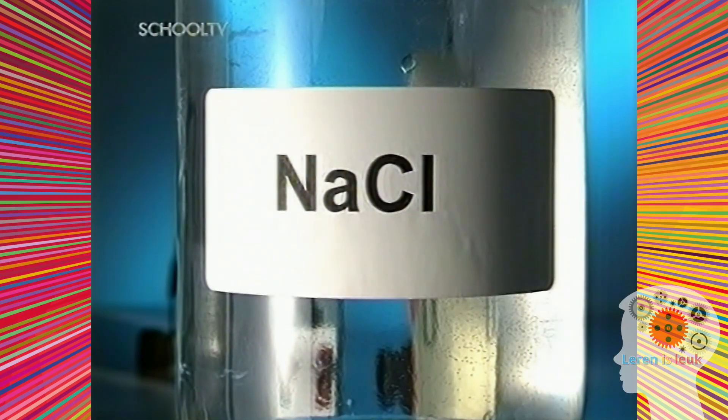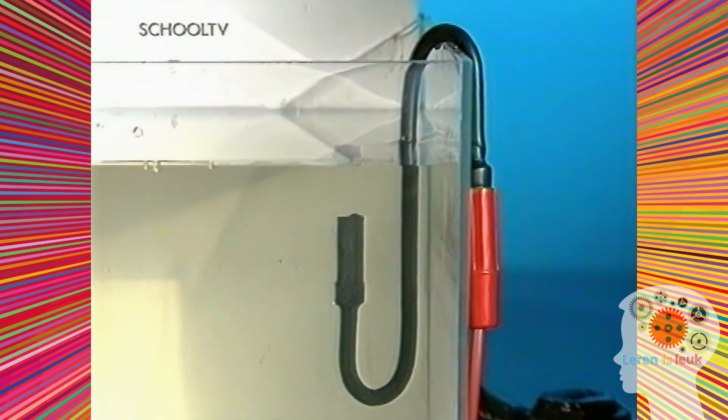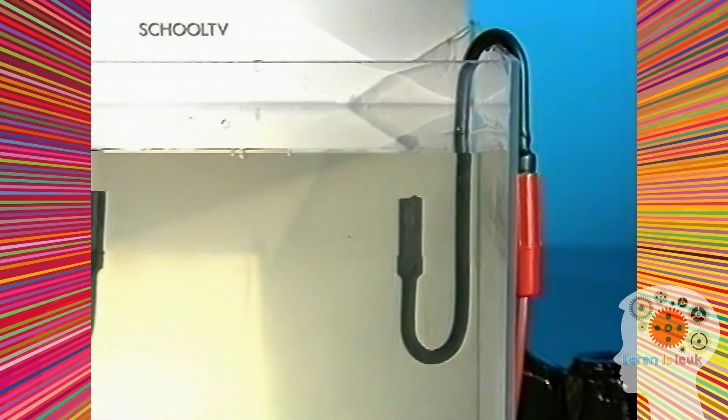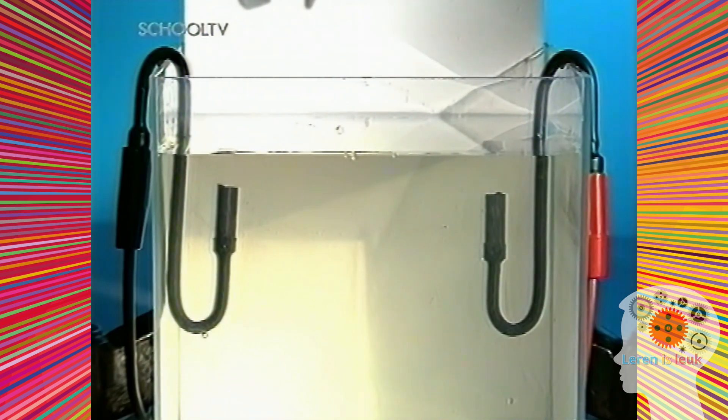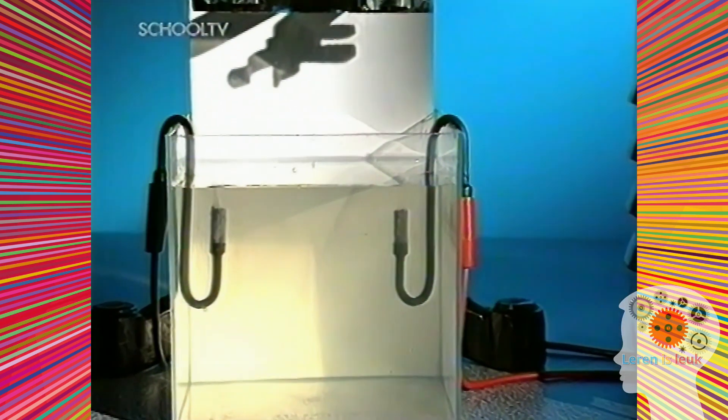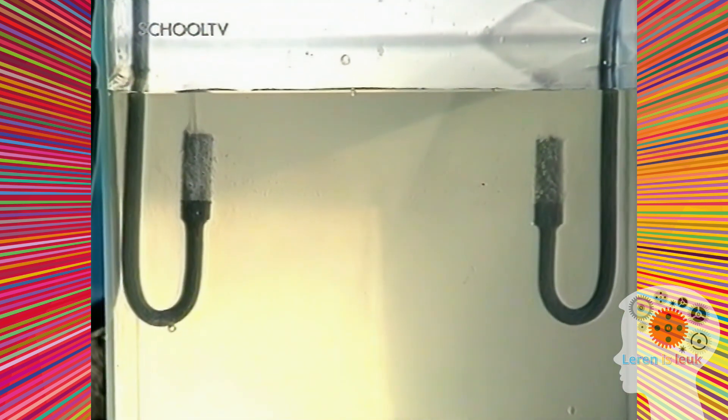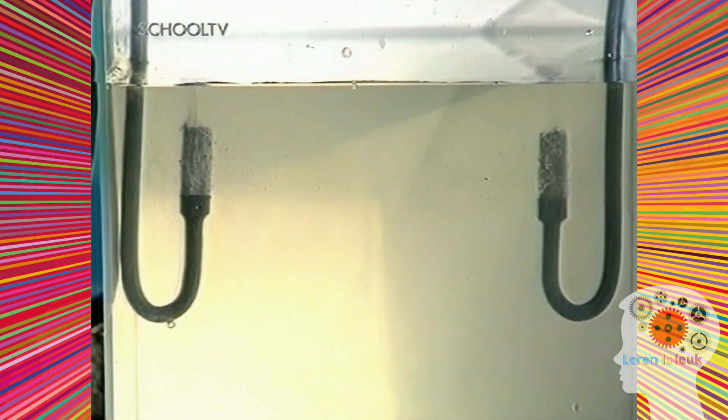Om te zien wat er gebeurt, hebben we hier een eenvoudige opstelling gemaakt. Twee elektroden, ondergedompeld in een natriumchloride oplossing, worden verbonden met een stroombron. De elektroden zijn van koolstof. Kijk eens wat er gebeurt als er stroom door de vloeistof gaat. Bij beide elektroden verschijnen er belletjes, een teken dat er gassen vrijkomen.